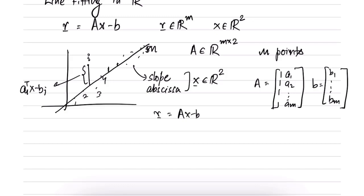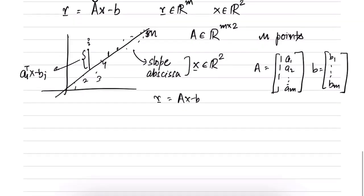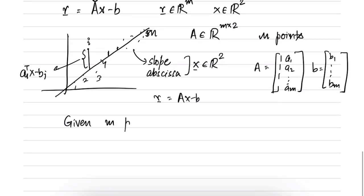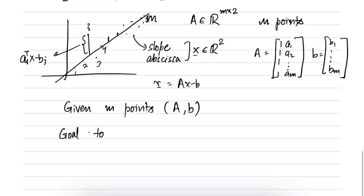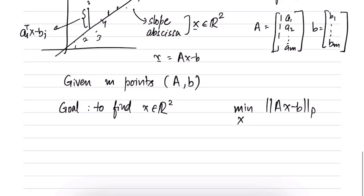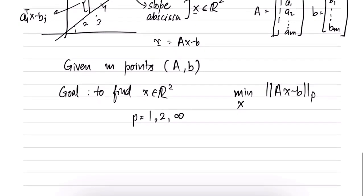Let us see what is the impact of minimizing different norms when trying to fit a line. We are given m points — that is, we are given A and b — and our goal is to find x in R^2 by minimizing the p-norm of Ax minus b with respect to x. We compare the cases for p = 1, 2, and infinity. These three are the most interesting, though we can take any p greater than or equal to 1.